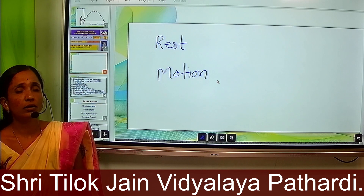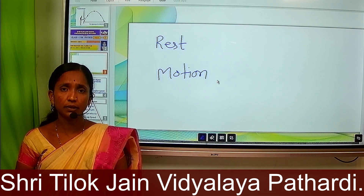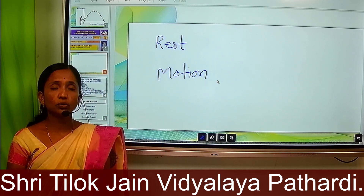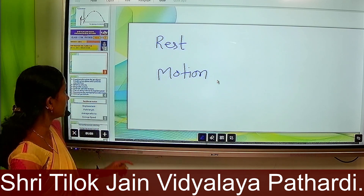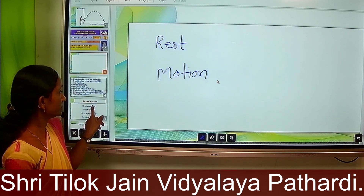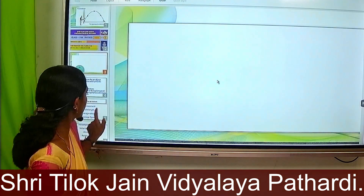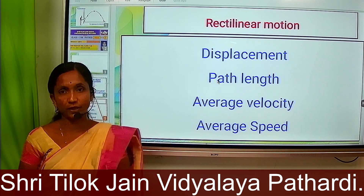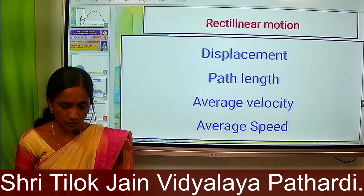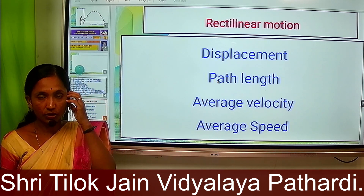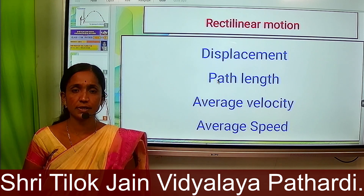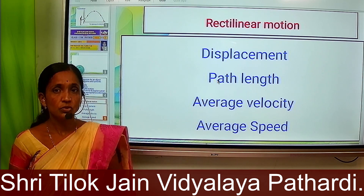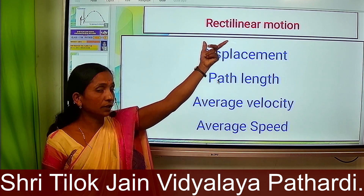In this chapter, we will study different types of motion in a plane, that is, motion with two coordinates. First in this chapter we will discuss rectilinear motion, circular motion, and projectile motion. So first we have to see about rectilinear motion.